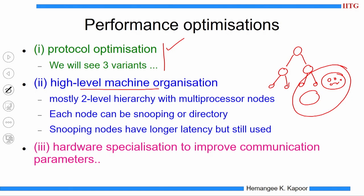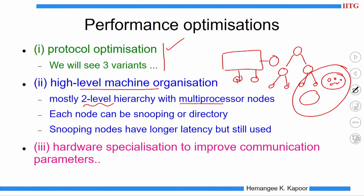To avoid excess latency, a two-level hierarchy performs much better. In a two-level hierarchy, you have a global network with multiprocessor nodes connected to it — each node contains n processors. Within the node, you can use a snooping or directory protocol. Snooping is still popular because commodity servers supporting snooping can simply be plugged in. For machine organization, a two-level hierarchy is preferred, though other options are also viable.